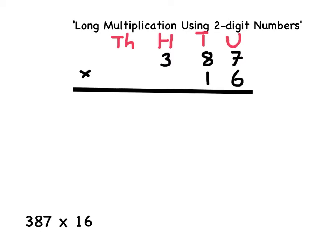I'm now ready to begin my long multiplication. When using long multiplication, the first multiplication is always by the smallest number in the number you are multiplying by, in this case the 6 of 16. This means my first multiplication will be 7 multiplied by 6, which gives me an answer of 42.